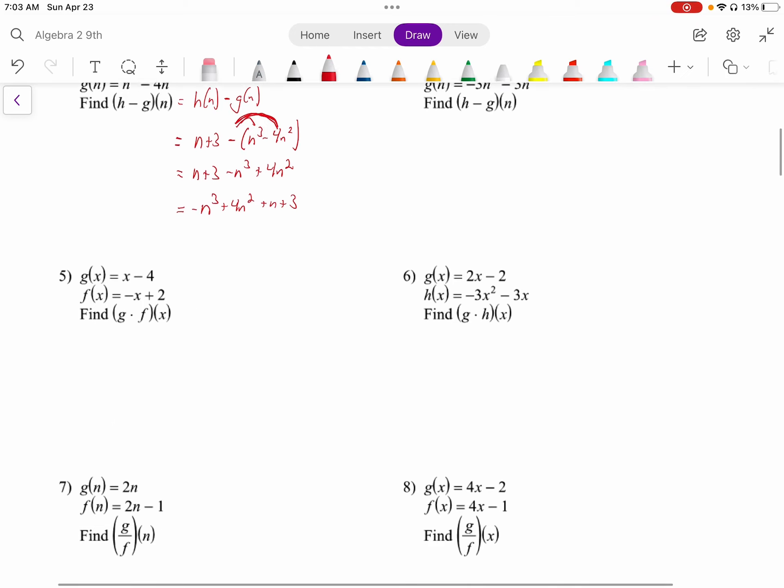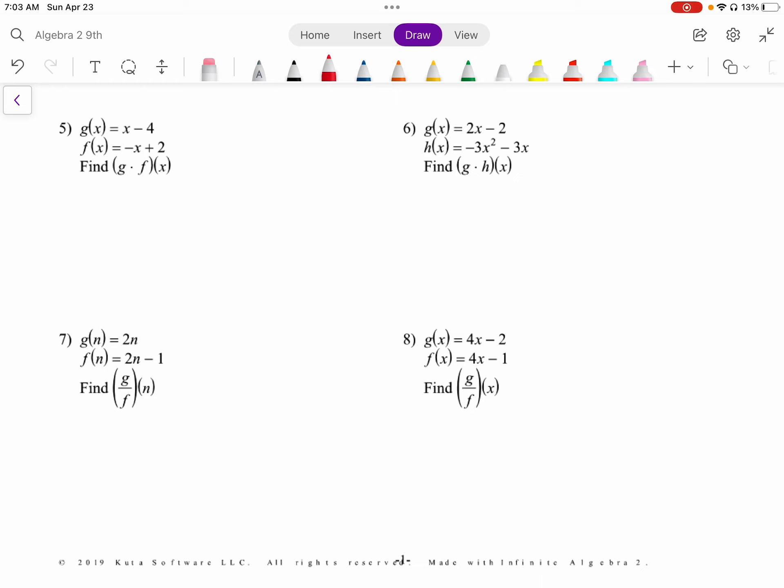And number 4 will work similarly. Number 5 is multiplication. Once again, g times f of x just means g of x times f of x. g of x is x minus 4, f of x is negative x plus 2. And now we distribute. A lot of times we use the idea of FOIL to multiply these, but it is just the distributive property. First, outer, so we have negative x squared plus 2x plus 4x, because we have a negative times a negative, and then negative 4 times positive 2 is negative 8. These two terms are like terms, so y equals negative x squared plus 6x minus 8.